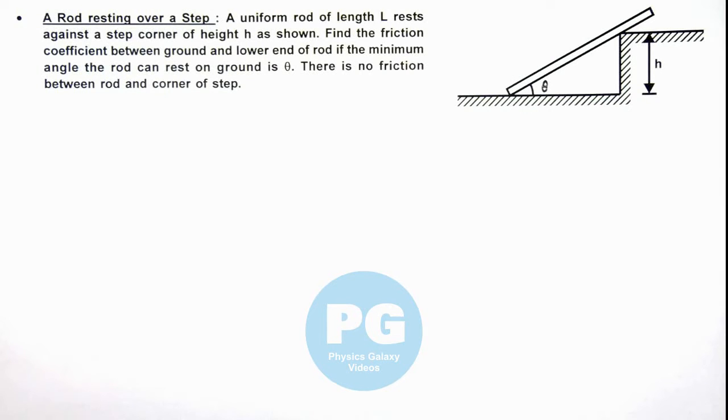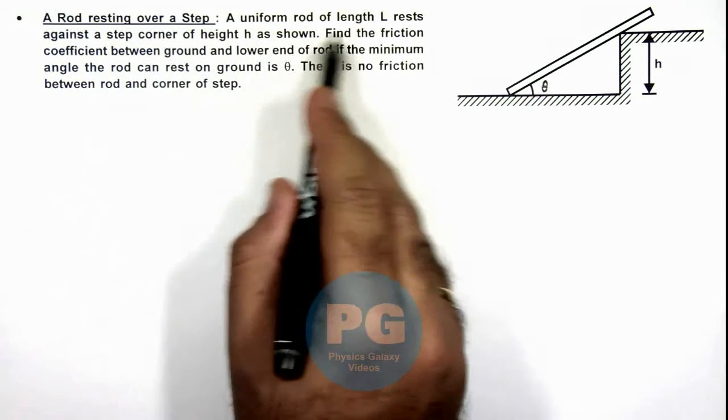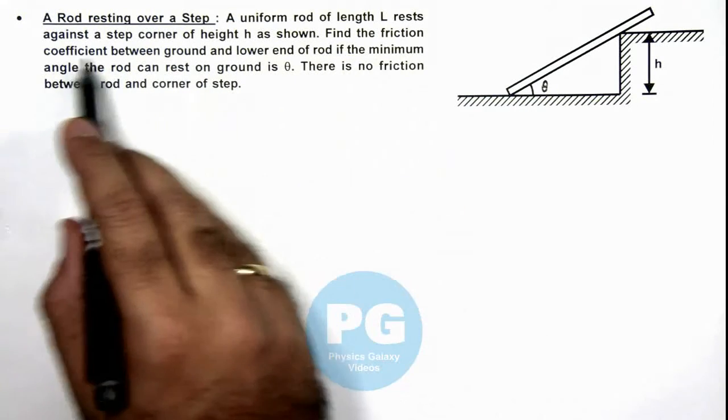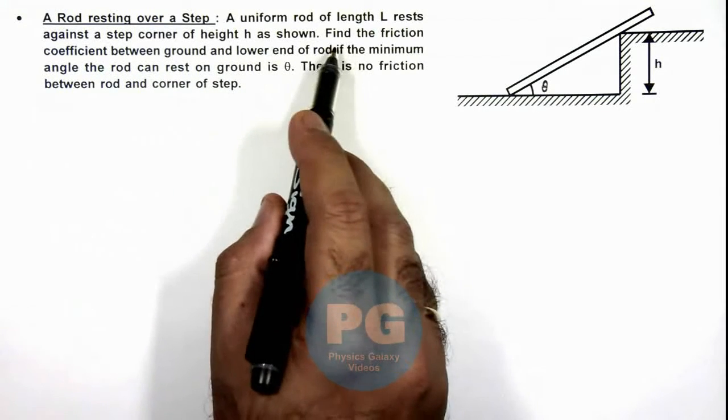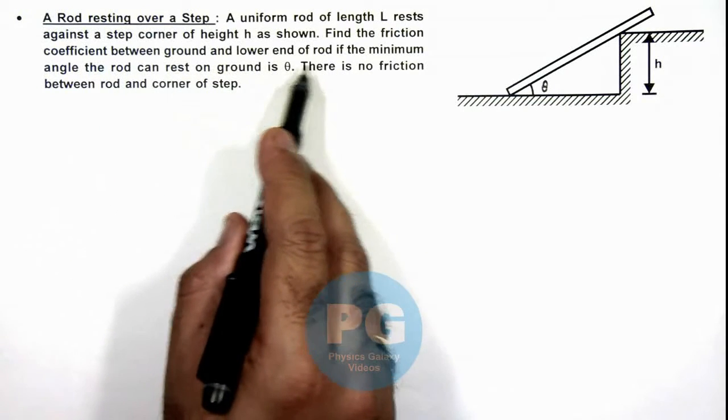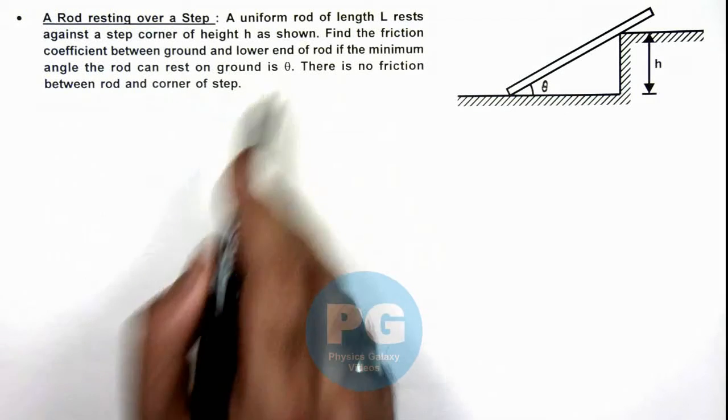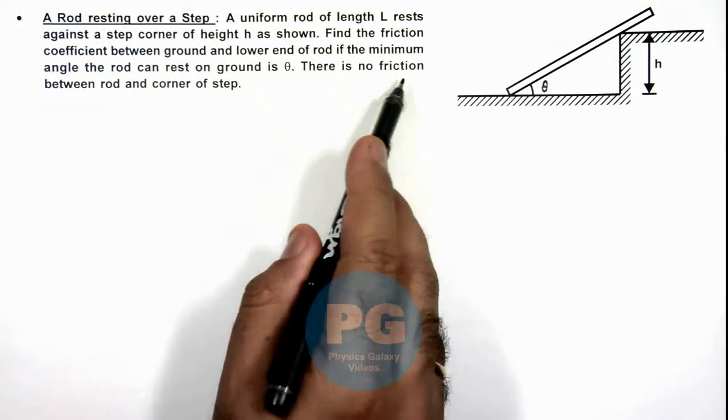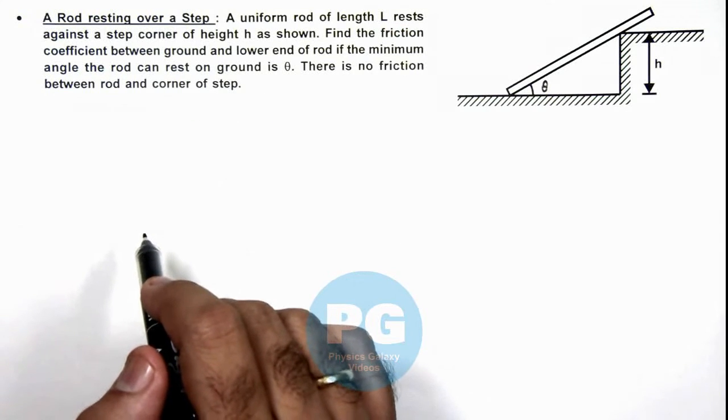In this illustration, we'll analyze a rod resting over a step. We are given that a uniform rod of length L rests against a step corner of height h as shown. We are required to find the friction coefficient between ground and lower end of rod if the minimum angle the rod can rest on ground is theta, and there is no friction between rod and corner of step.